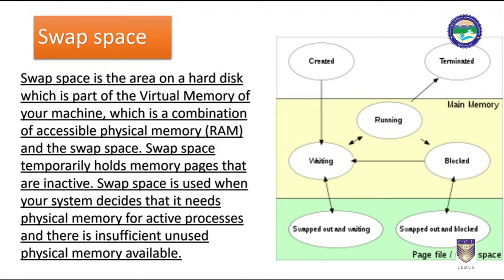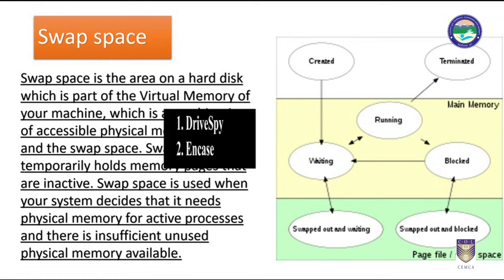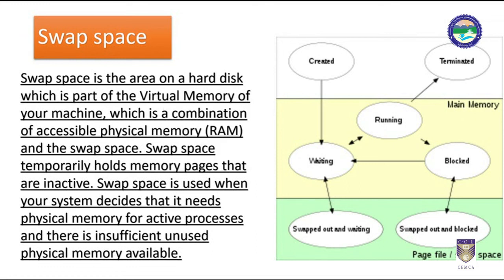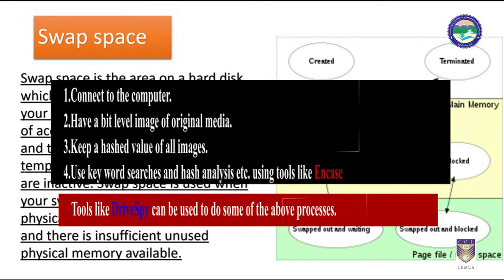Several tools are available to retrieve slack space and swap space on Windows systems. Slack space can be retrieved using popular tools such as Drive Spy, EnCase, etc. The overall retrieval process involves connecting to the computer, creating a bit-level image of the original media, keeping a hashed value of all images, and using keyword searches and hash analysis. Tools like EnCase and Drive Spy can be used to perform these processes.